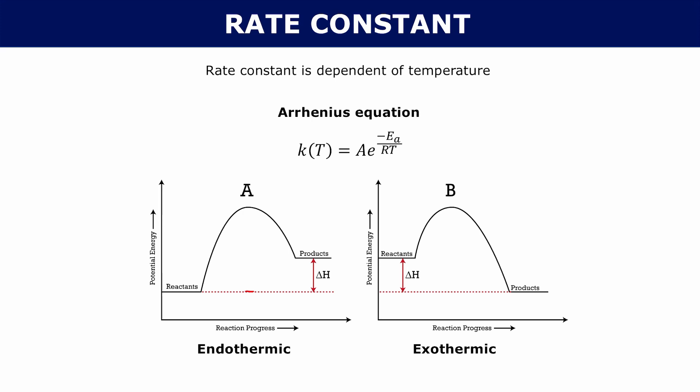Whenever you look at any reaction, its reaction energy diagram is going to look something like the ones shown here. You always have your reactants and your products, and depending on whether your reaction is endothermic or exothermic, your products may be above or below your reactants.